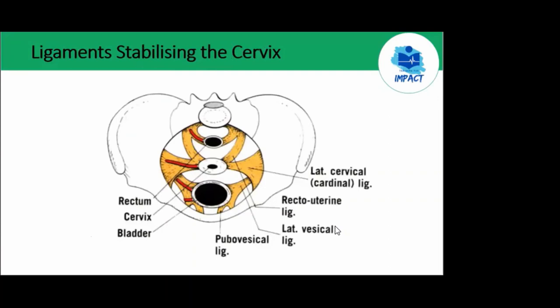Regarding the cervix: the main stabilizing ligaments are the lateral cervical ligament — also known as the cardinal ligament — the uterosacral ligament — also known as the rectouterine ligament — and the pubocervical ligament.